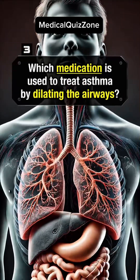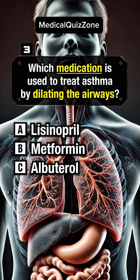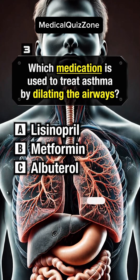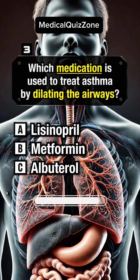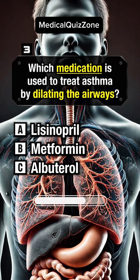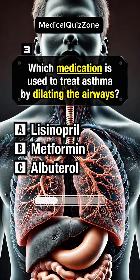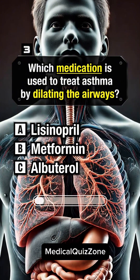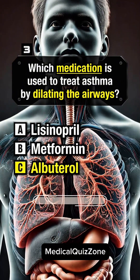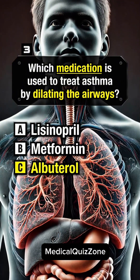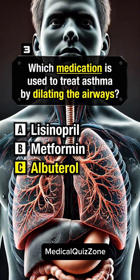Which medication is used to treat asthma by dilating the airways? Answer C: Albuterol.